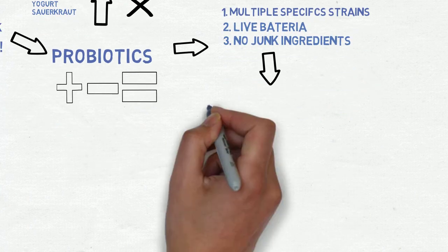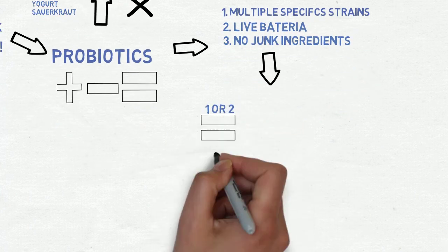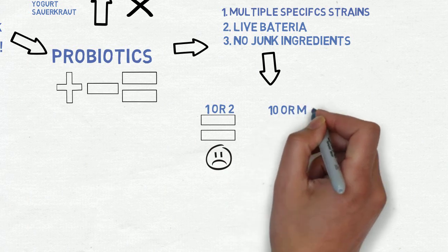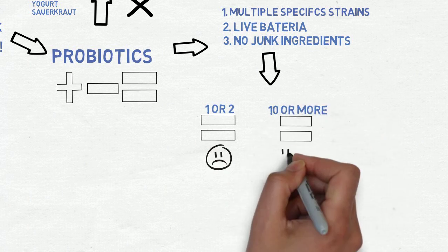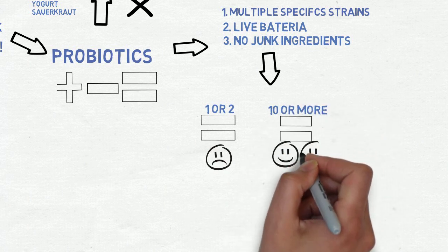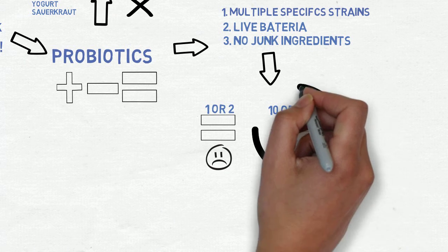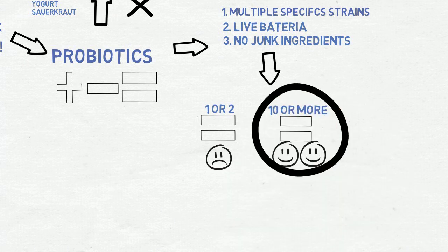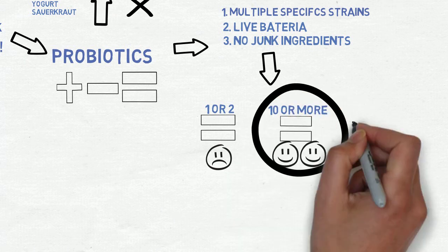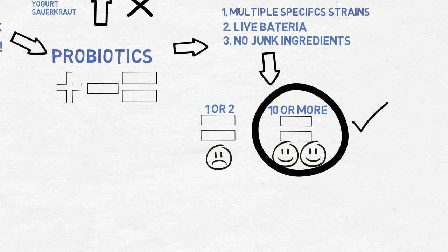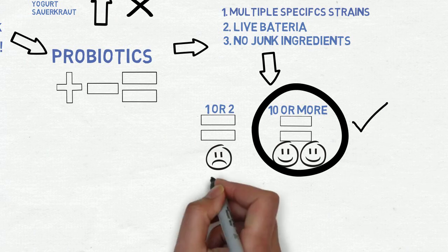Some probiotics have only one or two strains of bacteria. That's no good. The good ones have upwards of 10. The theory behind this is that they will work better as a team than alone. Different bacteria have slightly different functions and work in various places along your digestive tract. So especially for those of us with compromised intestinal health, it's important to hit every area and not just one part.